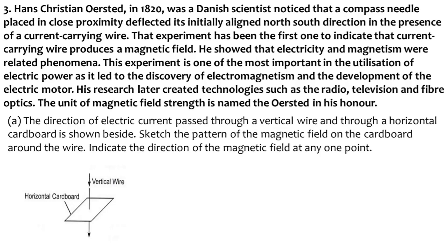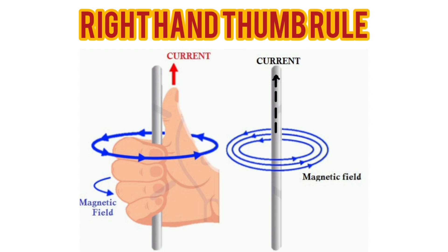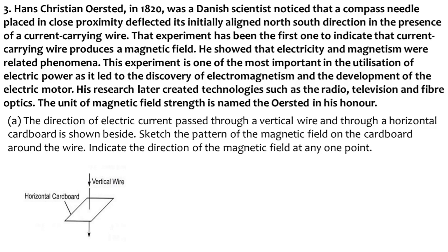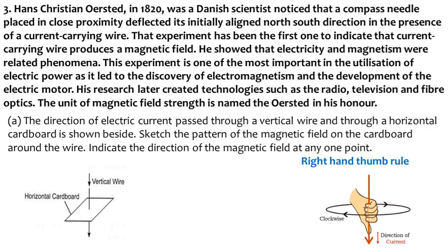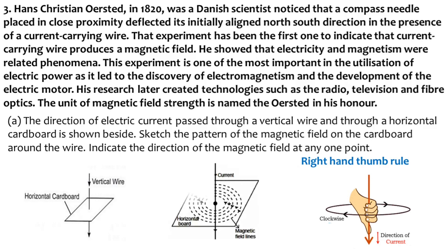First question: the direction of electric current passing through a vertical wire through a horizontal cardboard is shown. Sketch the pattern of the magnetic field on the cardboard around the wire and indicate the direction of the magnetic field at any one point. The direction of magnetic field in a straight current-carrying conductor is given by the right hand thumb rule. The current is going in the downward direction — keep your right hand so that the thumb points downward, and the other four fingers close in a clockwise direction. So the magnetic field around this vertical current-carrying conductor is in the clockwise direction. Always remember to put arrow marks to show the direction.